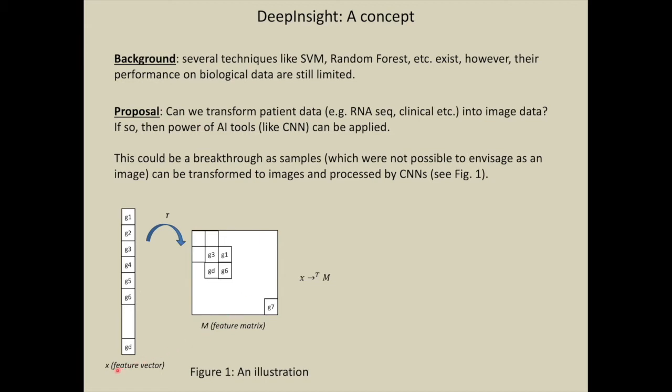Here you can see we have a feature vector of d features, and we use transform t to make it a feature matrix. Let us assume that g1, the first feature, is closely related to g3. g1 is also related to g6, and g6 is related to gd. Basically, features which are closely related should come together, and features which are not closely related should be located far apart. This is the kind of transformation we want to find.